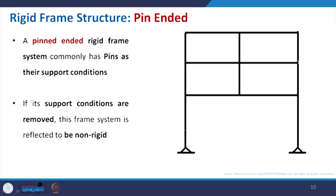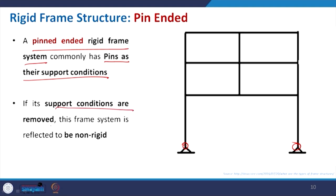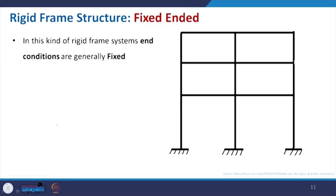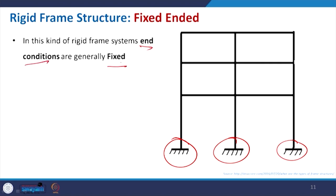In a pin-ended rigid frame system, pins are commonly used as the support condition. If the pin support is removed, the structure becomes non-rigid. For the fixed-end rigid frame system, the end conditions are generally fixed, not pin. The representation of the structure changes accordingly to indicate fixed ends.